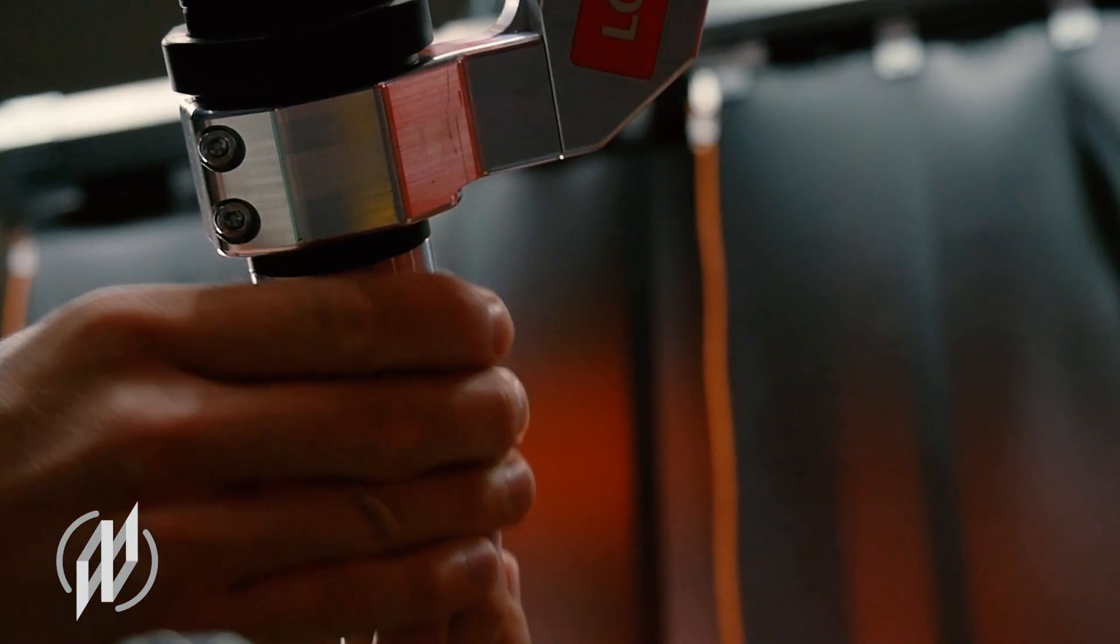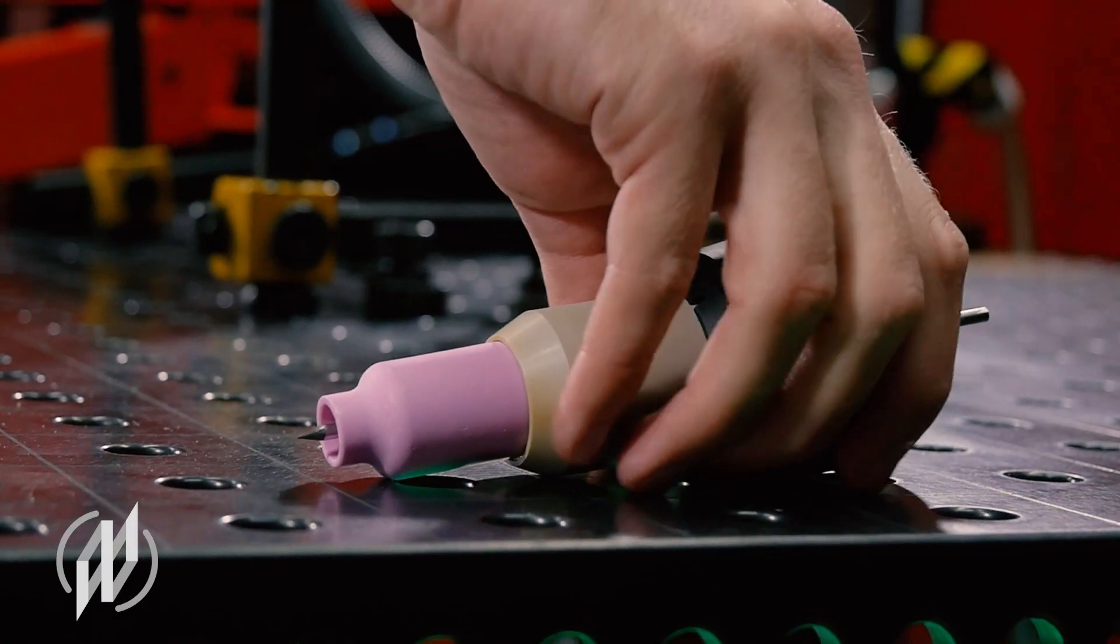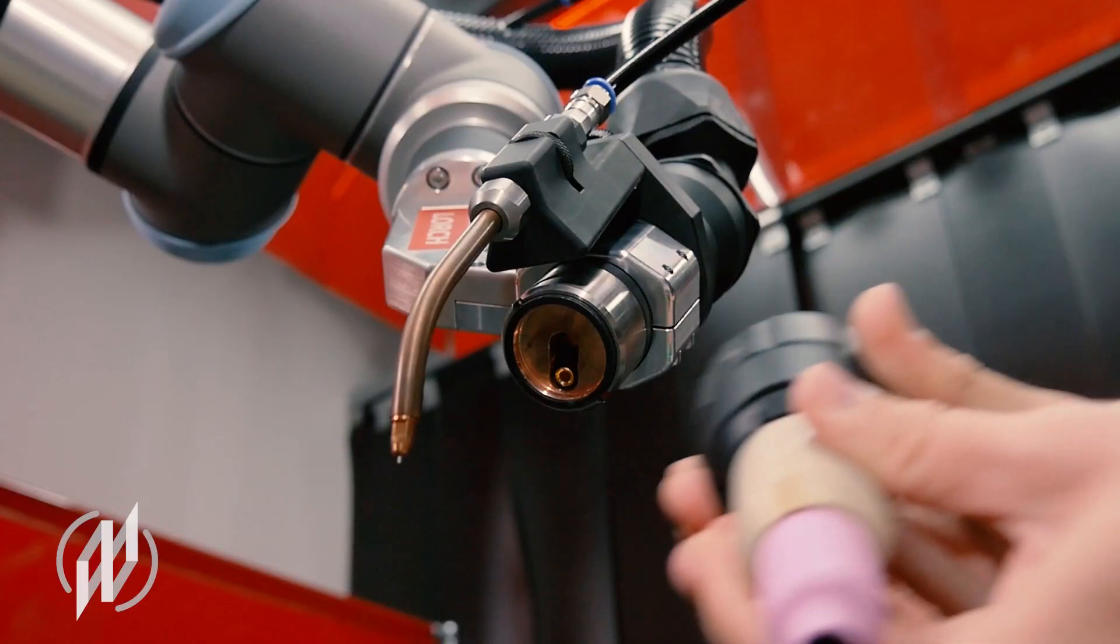To do this simply rotate the locking nut 90 degrees, remove the torch and quickly replace the tungsten.